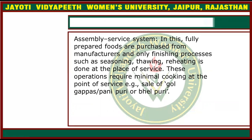The fourth and last is the assembly service system. In this system, fully prepared food is purchased from the manufacturer. Then seasoning, thawing, and reheating are all done in one place. This service system stays at one point where they are preserved, on-time cooked, and on-time served.